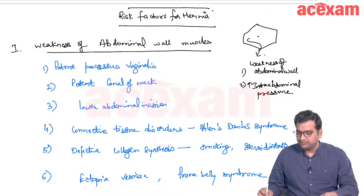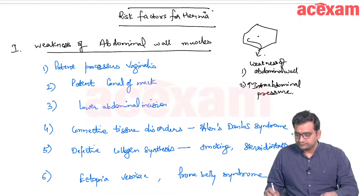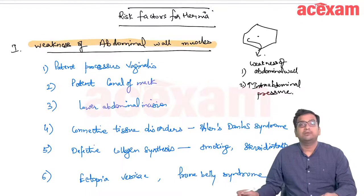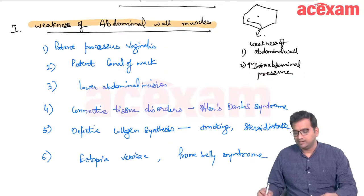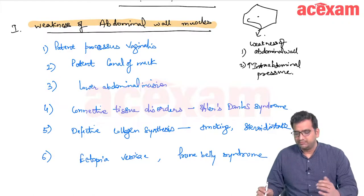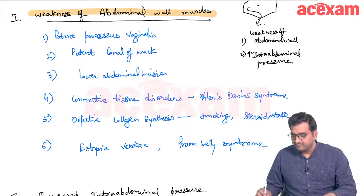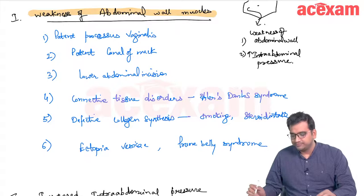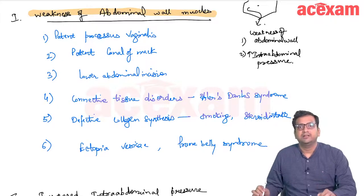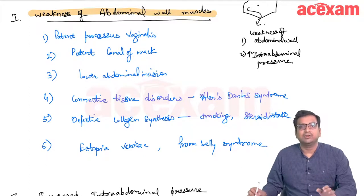Causes of abdominal wall weakness include: patent processus vaginalis, patent canal of Nuck, lower abdominal incision, connective tissue disorders such as Ehlers-Danlos syndrome, defective collagen synthesis seen in smokers and steroid users, and ectopia vesicae or prune belly syndrome.